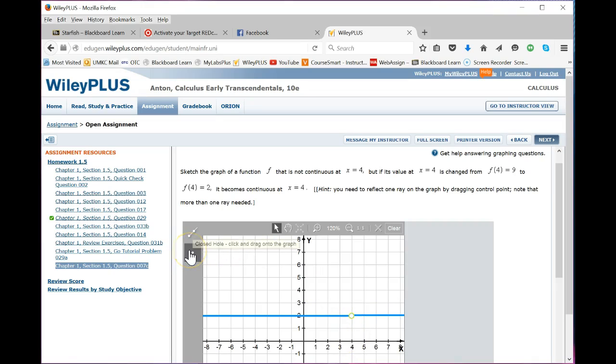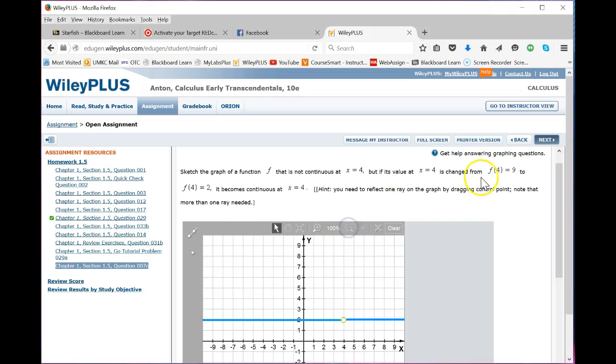And then I'm going to drag the point where the value of the function at 4 is 9. So 4, 9... let me get that lined up. 4, 9.